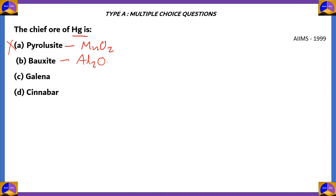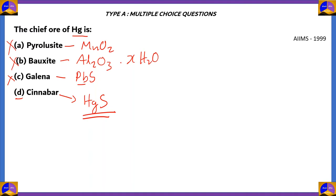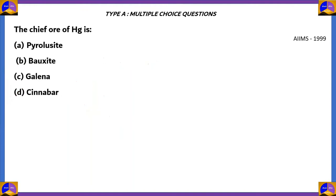Option B, bauxite — most of you are familiar that bauxite is the ore of aluminium, with the general formula Al2O3·xH2O. So option B is also incorrect. Option C, galena has the formula PbS, so it is an ore of lead — option C is also incorrect. The right answer is option D, cinnabar. Cinnabar has the chemical formula HgS, so it is the sulphide ore of mercury. Option D is the right option.